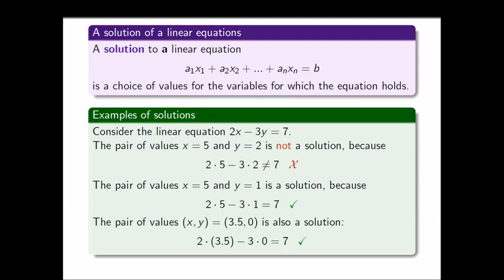Similarly, if we take the pair of values x, y equal to 3.5, 0, that is also a solution because the left-hand side is 2 times 3.5 minus 3 times 0, which is 7 minus 0, which is 7 — the same as the right-hand side. So the equation is satisfied again, and therefore this pair is a solution.